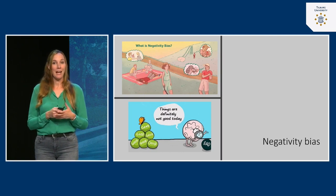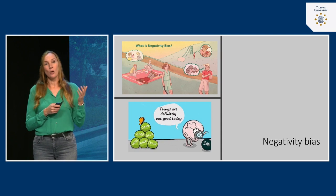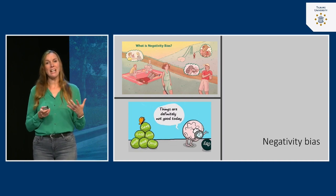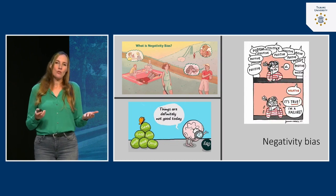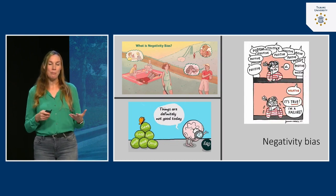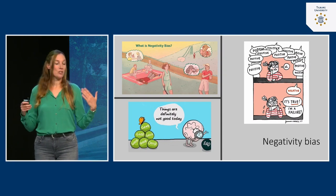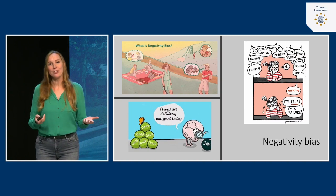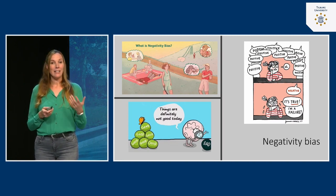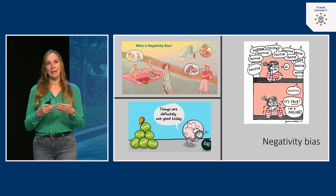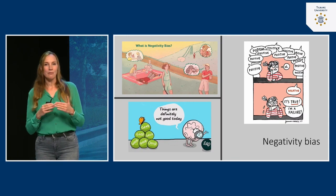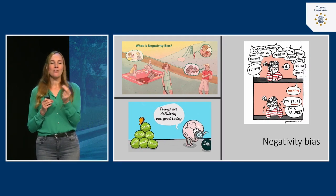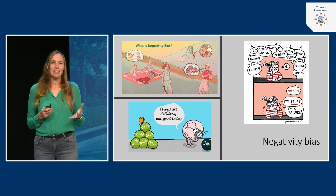The negativity bias can be explained from an evolutionary perspective — being on the lookout for danger helped keep us alive. However, it also has bad consequences, especially when it comes to feedback. If I give a lecture and a lot of people enjoy it but a few offer criticism, that negative feedback always hits harder. You can hear all positive words and praise, but the one person saying something negative — that's what we remember and seek out.